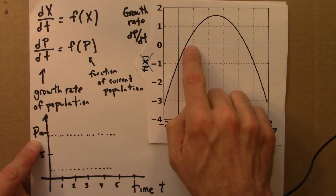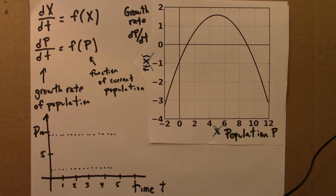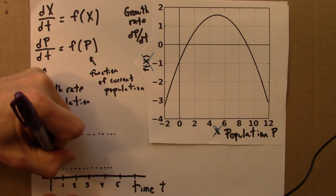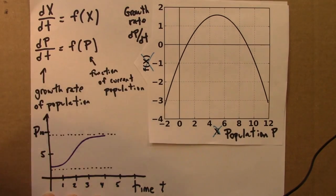If I start, say, at 2, I'll grow, I'll increase until I get to 9. So, I could sketch that here. I'm increasing, and I'm approaching 9.